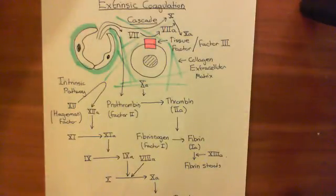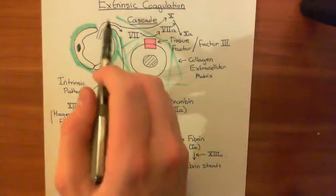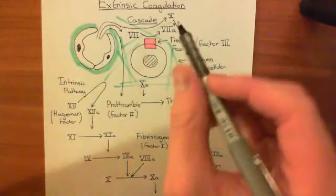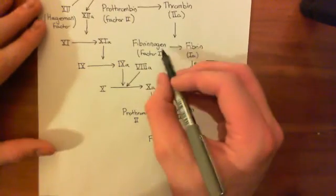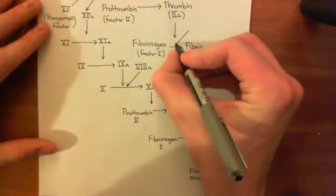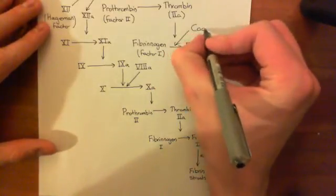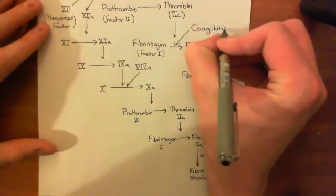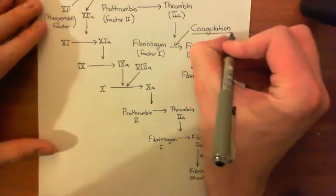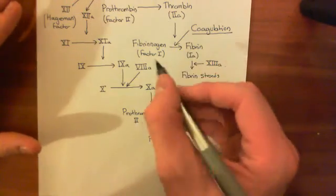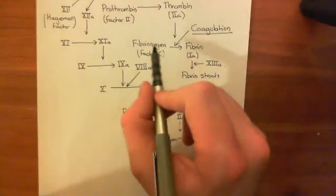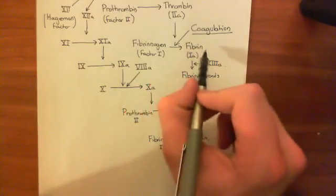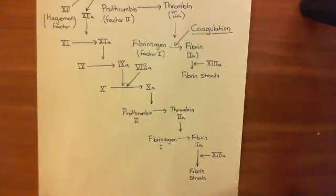Fibrin strands are not the only thing that seals the vessel — we haven't discussed hemostasis fully yet. Coagulation does not mean the forming of a blood clot. Coagulation means the conversion of fibrinogen into fibrin. Yes, coagulation is a very important part of forming a hemostatic plug — the scientific name for a blood clot — but it's not the whole story as far as hemostasis is concerned.